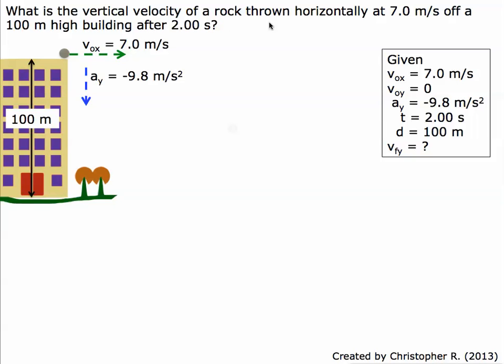What is the vertical velocity of a rock thrown horizontally at 7 meters per second off a 100 meter high building after 2 seconds?